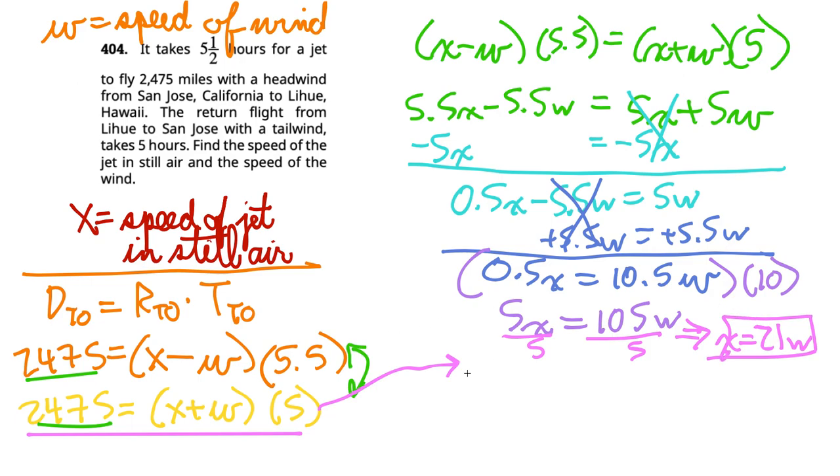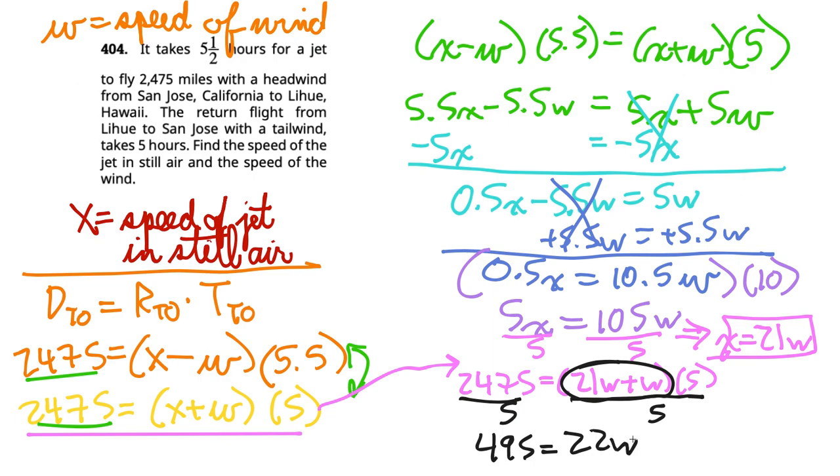So now we're going to have 2475. Instead of X plus W, we're going to write 21W plus W times 5. We're going to take this 2475, divide everything by 5, left side and right side. So we have 495 equals 22W. We're going to divide both sides by 22. And we get 22.5 equals wind. So 22.5 MPH miles per hour.